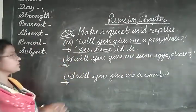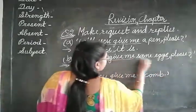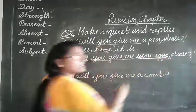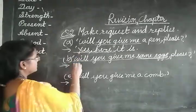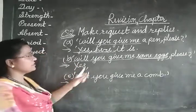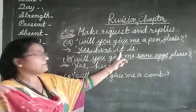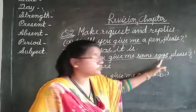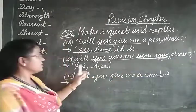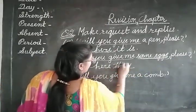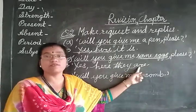Now dear children, let us see the next question: 'Will you give me some eggs please?' Some eggs — more than one egg. Our reply will be 'Yes.' Here, since eggs is plural, we will use the pronoun 'they.' So the reply is: 'Yes, here they are.' We use 'are' — not 'is' — because we have plural here, more than one egg.